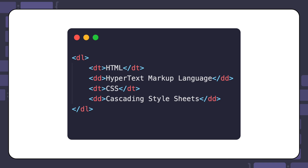You will need three HTML elements to define a description list. First, the description list element, DL, which is the container for the entire list. You can see it here, around all the other elements of the description list.